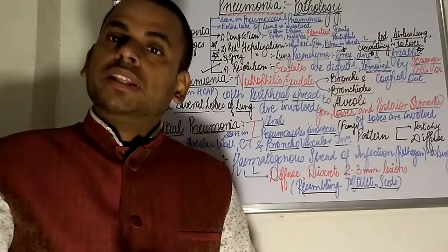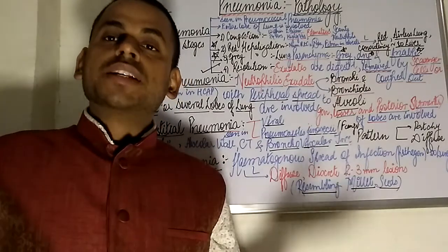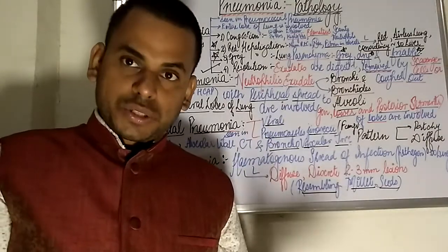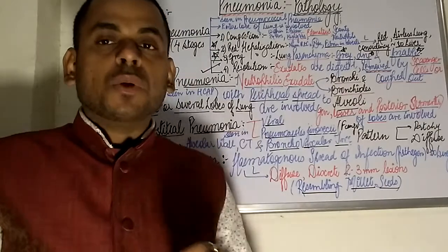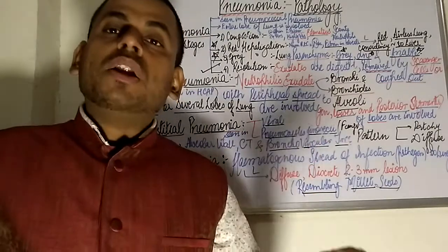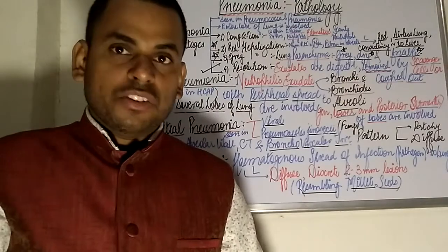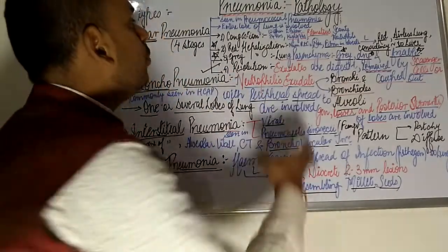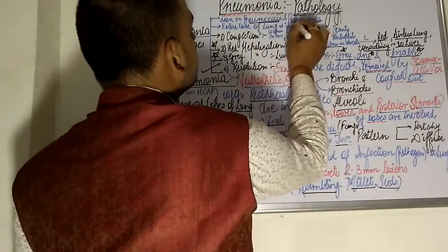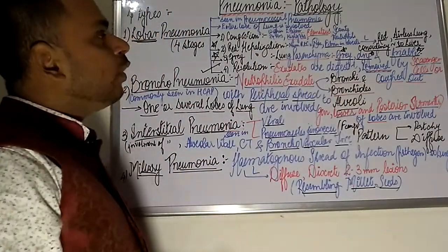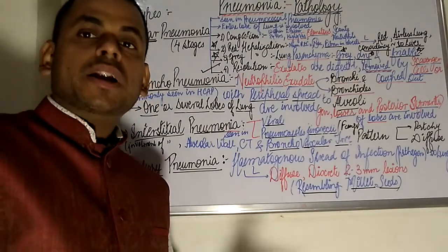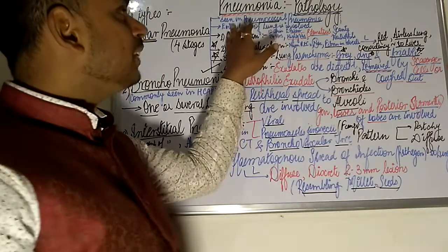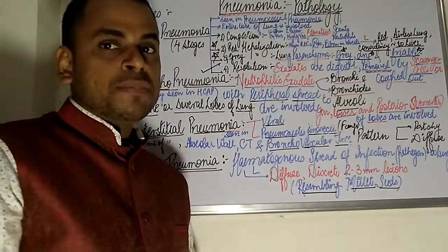As we already know from anatomy, the lung is divided into the right and left lung. The right lung has three lobes whereas the left lung comprises two lobes. In lobar pneumonia, only a particular lobe of the lung gets involved. It is mostly seen in pneumococcal pneumonia, where the entire affected lobe of the lung is involved.